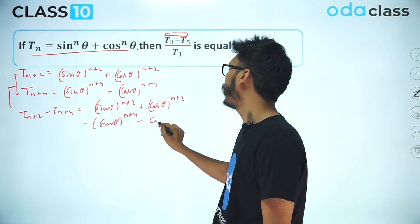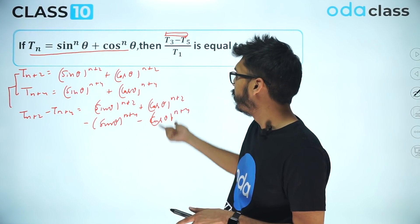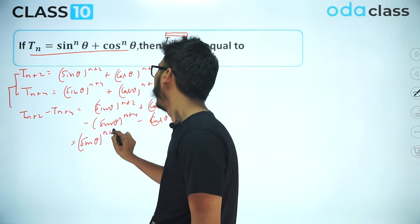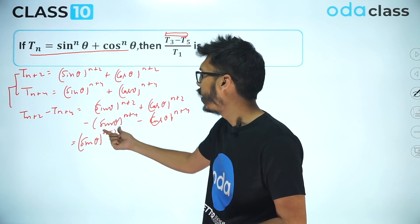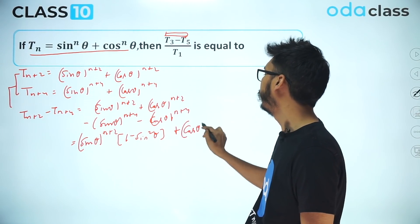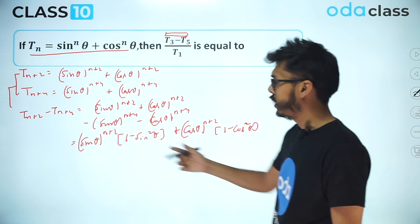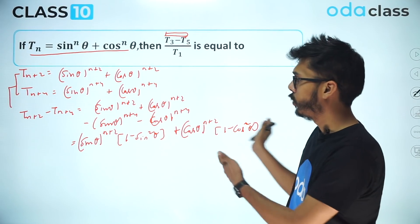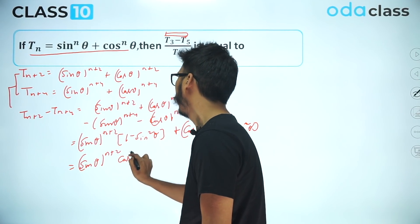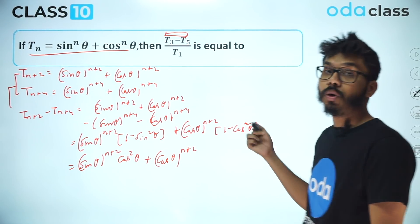From the sine terms, I take sin^(n+2)θ common, and from the cosine terms, I take cos^(n+2)θ common. Inside the brackets you get (1 − sin²θ) and (1 − cos²θ) respectively. We know 1 − sin²θ = cos²θ and 1 − cos²θ = sin²θ, so substituting gives sin^(n+2)θ · cos²θ + cos^(n+2)θ · sin²θ.